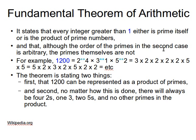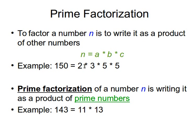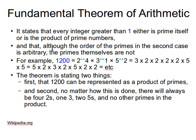Although the order of the primes in the factorization is arbitrary, the primes themselves are not. What that means is that these prime numbers can be arranged as, for example, 5 times 2 times 3 times 5, or 3 times 2 times 5 times 5 — the order doesn't really matter. But when you factor a number to its primes, you will always have the same prime numbers regardless of the order.